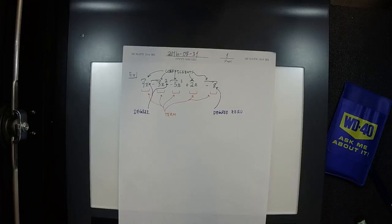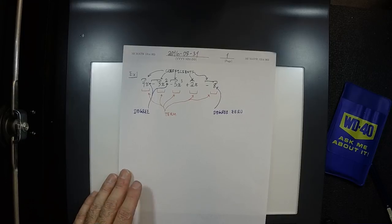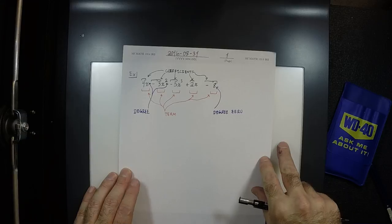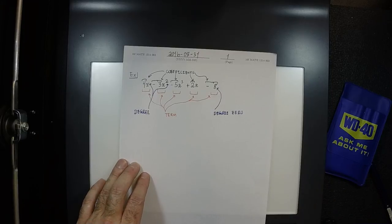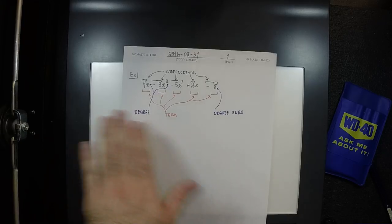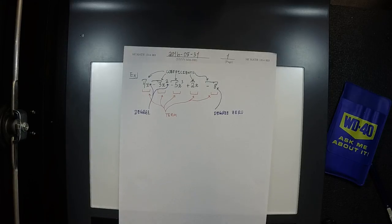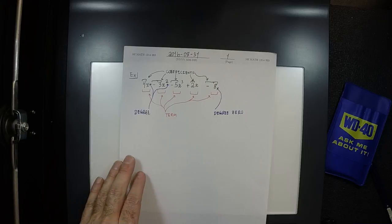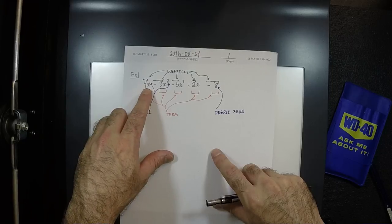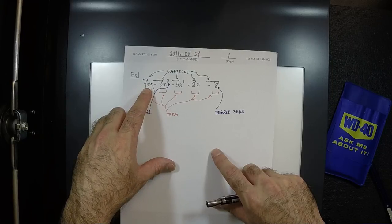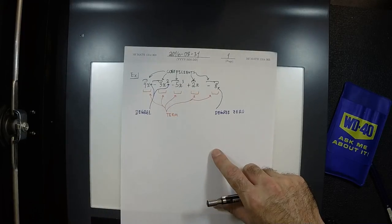For every polynomial, there's a standard way to write it — we called that standard form. Is this polynomial written in standard form? No. What requirements must be met? All similar terms are collected. What is the criterion that deems terms as similar? The degree being the same. When degrees are the same, terms can be collected. Here, 4x — are there any other degree-one terms? Yes, there's 2x. So this is not collected.